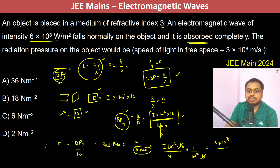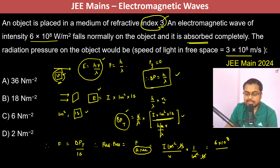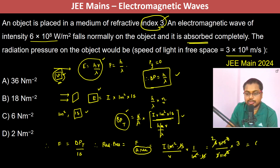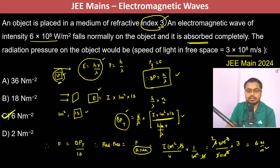Since the refractive index is 3, the velocity is c/μ, so V = 3 × 10⁸ / 3. Substituting this in, everything cancels and the radiation pressure comes out to be 6 Newton per meter square.